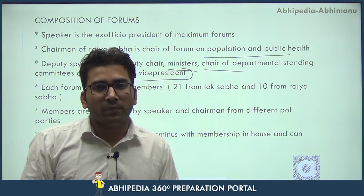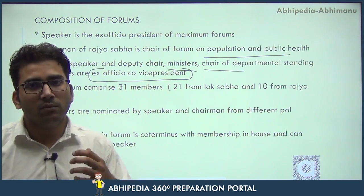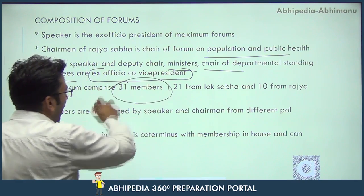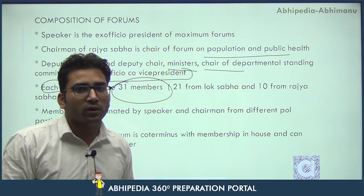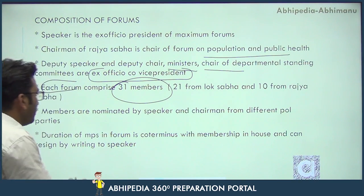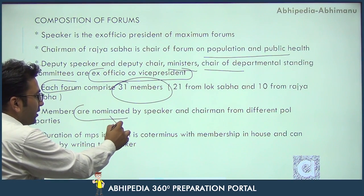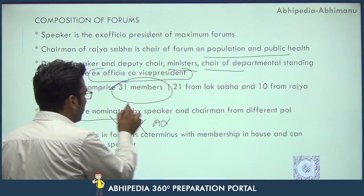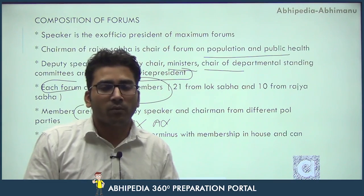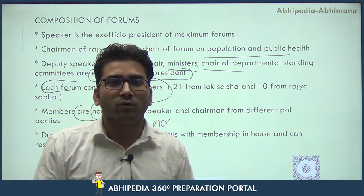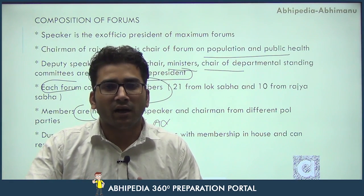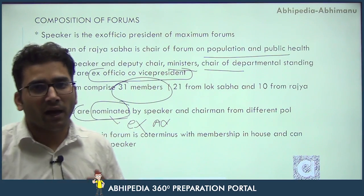So the Speaker is the president, the Deputy is the co-president, and the rest are the co-vice presidents. Each forum comprises 31 members of parliament — 21 from the Lok Sabha and 10 from the Rajya Sabha. These members are nominated — they are not elected and not appointed. They are chosen by the Speaker and the Chairman from different political parties in both respective houses to provide inclusivity and give every political party a good say in parliamentary lawmaking and other decisions.